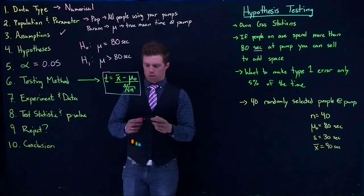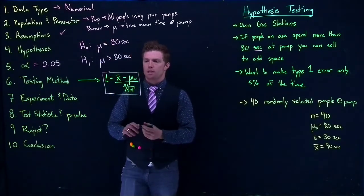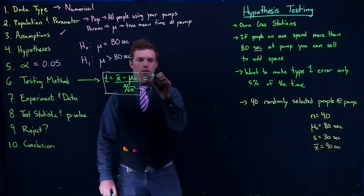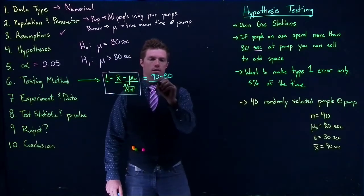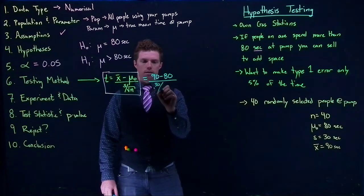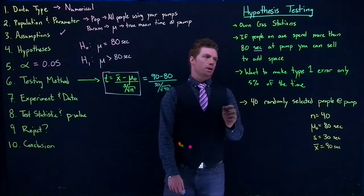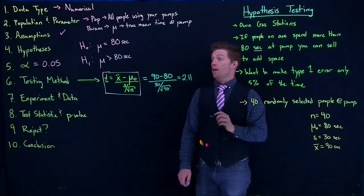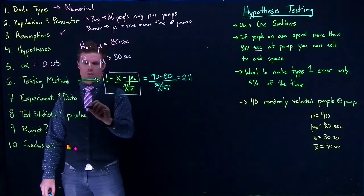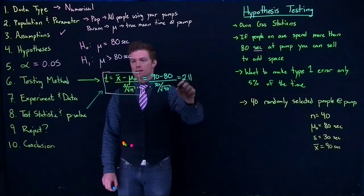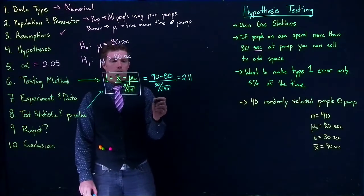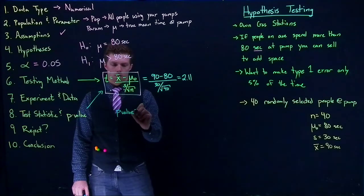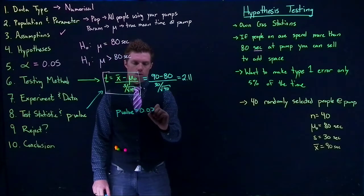Let's plug in the values: t equals x-bar 90 minus mu-naught 80, divided by s=30 divided by the square root of n=40. If you calculate this out, t equals 2.11. That is our test statistic. Using software, our p-value equals 0.021.